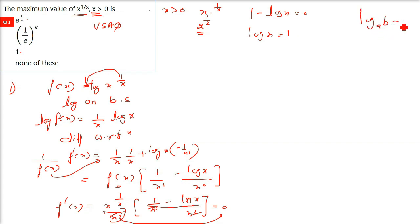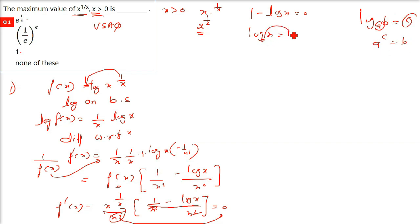So we set 1 minus log x equal to 0, giving log x equals 1. Using log base e: e raised to 1 equals x, so x equals e. This is the critical point or extreme point at which the maximum or minimum is achieved.